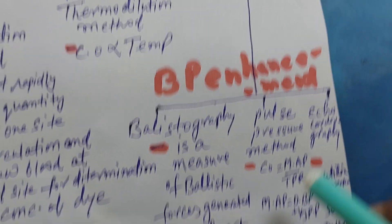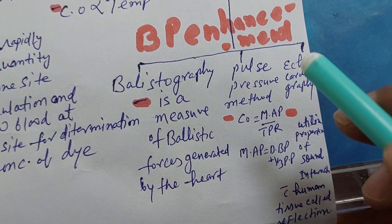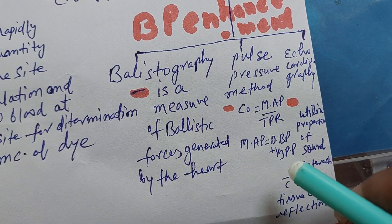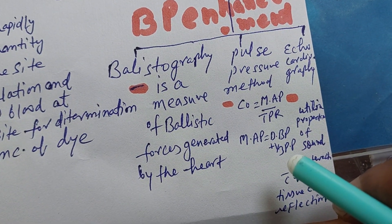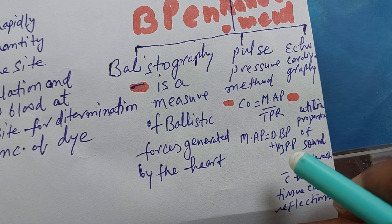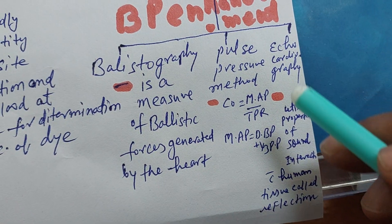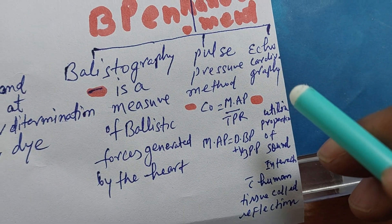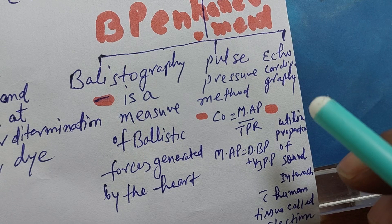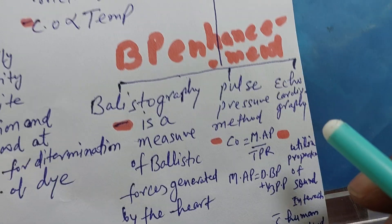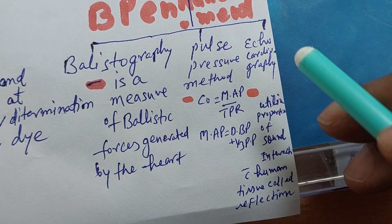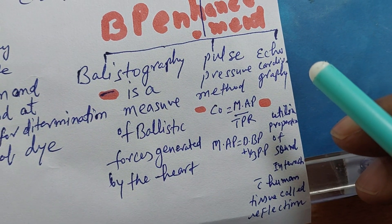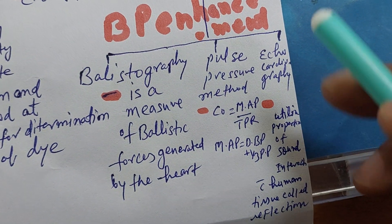Mean arterial pressure is diastolic plus one-third of pulse pressure. In that way, we calculate cardiac output. Echocardiography utilizes the property of sound interacting with human tissue, using chord reflection by echo waves.